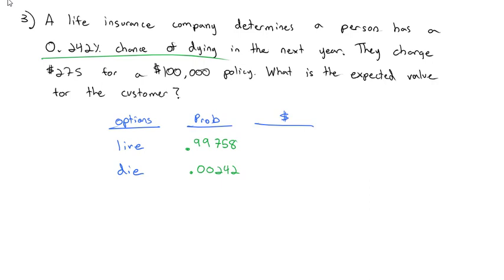If the customer lives, they've paid for an insurance policy they didn't use. They've actually lost $275. If they die, there's a payout of $100,000. But again, I have to be careful. They still paid for the policy. So we have to subtract off the $275. So 100,000 minus 275 in parentheses. And to calculate the expected value, we'll multiply the probability by the payout. So under live, the customer ends up with negative $274.3345. Under die, the customer makes, on average, $241.3345.